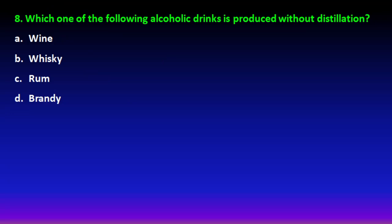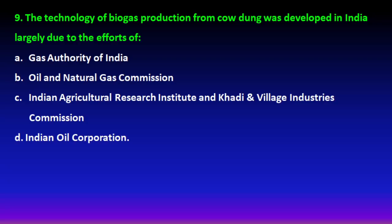Next question: which alcoholic drink is produced without distillation? Whisky, rum, and brandy are all made after distillation, but wine is produced without distillation. So option C (wine) is the right answer for question number 9.